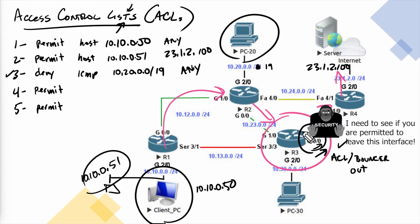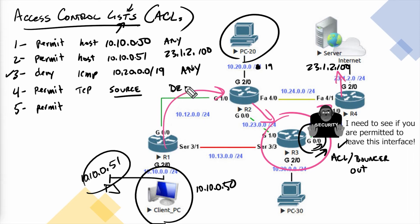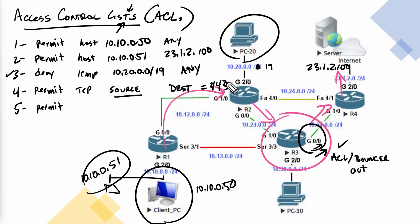By default, the router is happy to forward anybody's traffic anywhere it knows via its routing table. The access control list further refines what's allowed or not. For example, traffic trying to leave Gig 0/0 — we can permit TCP traffic from a specific source subnet going to a specific destination, and furthermore specify it must be destined to TCP port 443, which is the well-known port for HTTPS — or TCP port 80 for HTTP. The ACL can identify that at layer four.